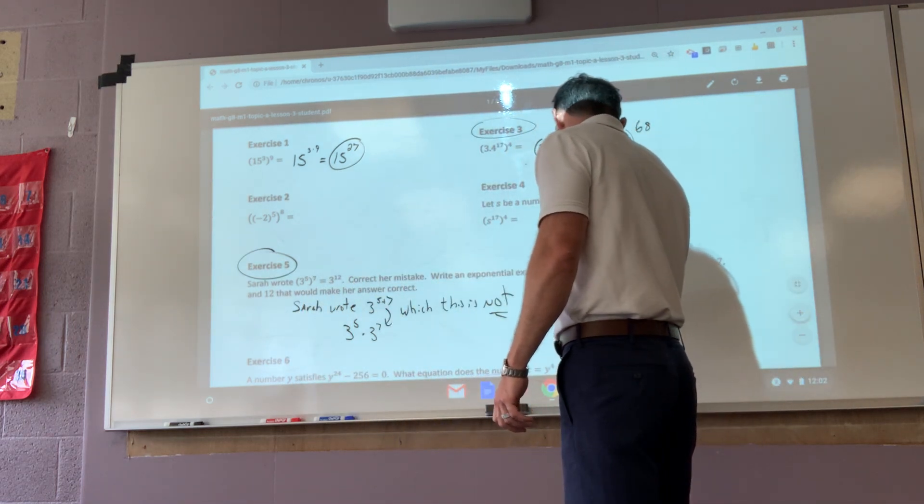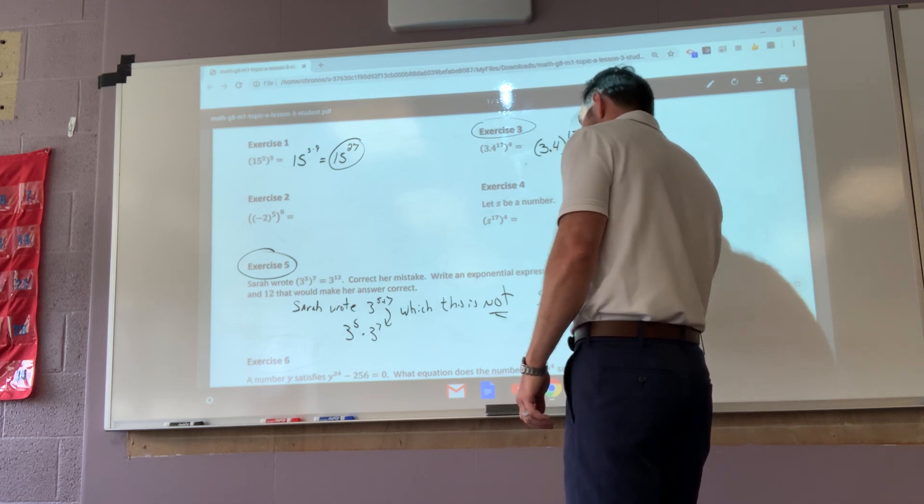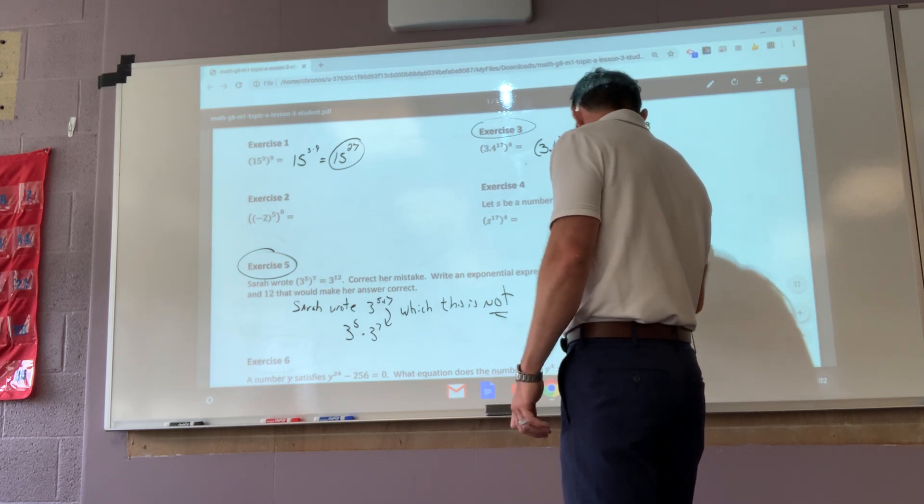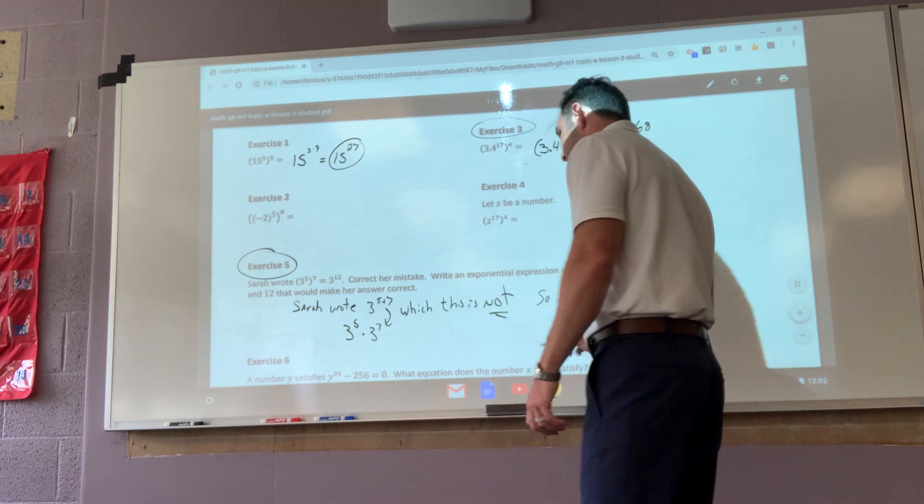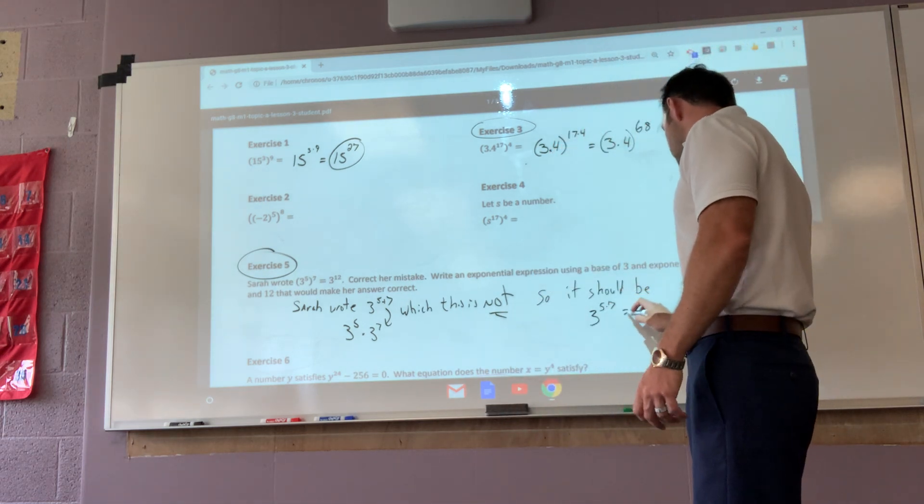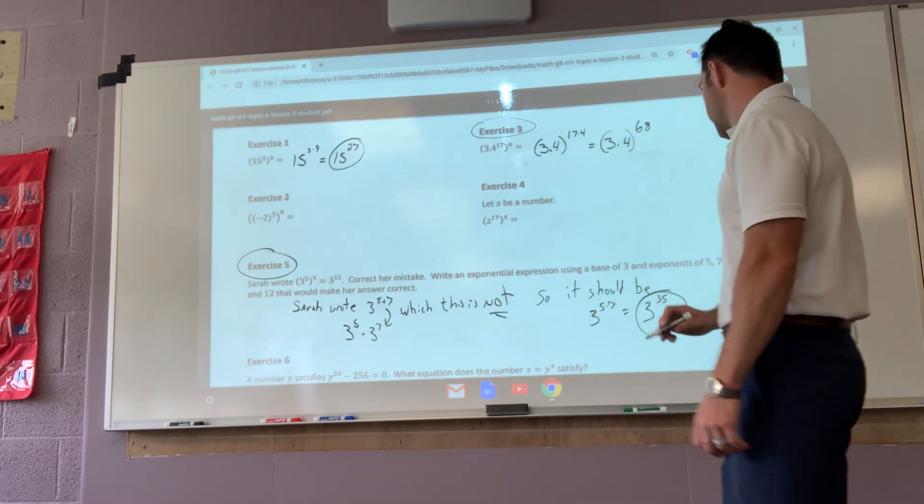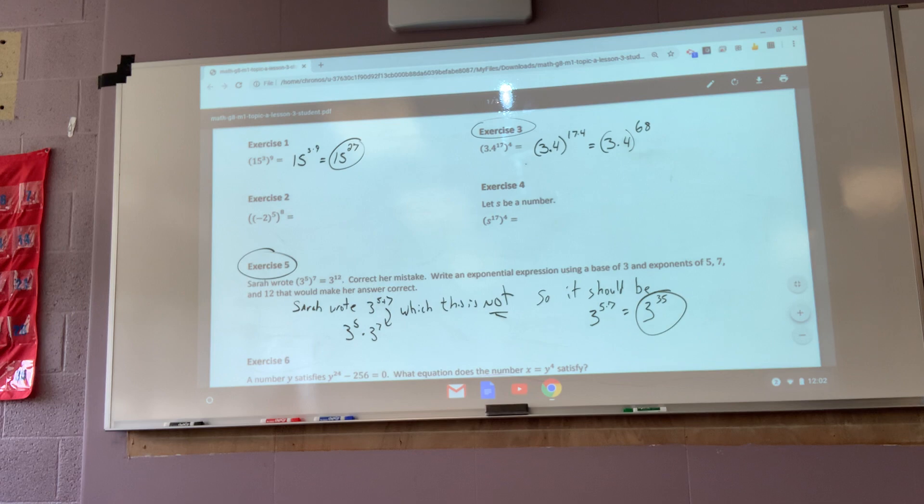Because this is an exponent raised to another exponent. So it should be three to the five times seven. Because there's three, three, three, three, three, seven times, which then gives me three to the thirty-fifth. Okay?